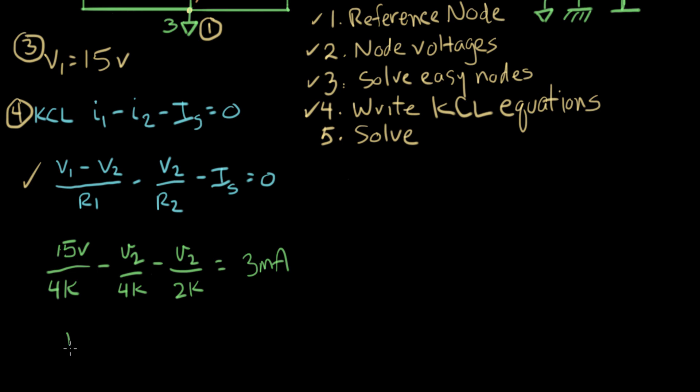Let's just keep working at this now. V2 times 1 over 4k plus 1 over 2k equals 3 milliamps. Oh, get my minus signs right. Minus sign over here. Let's bring the constant term over to this side. So this is 15 volts divided by 4k.